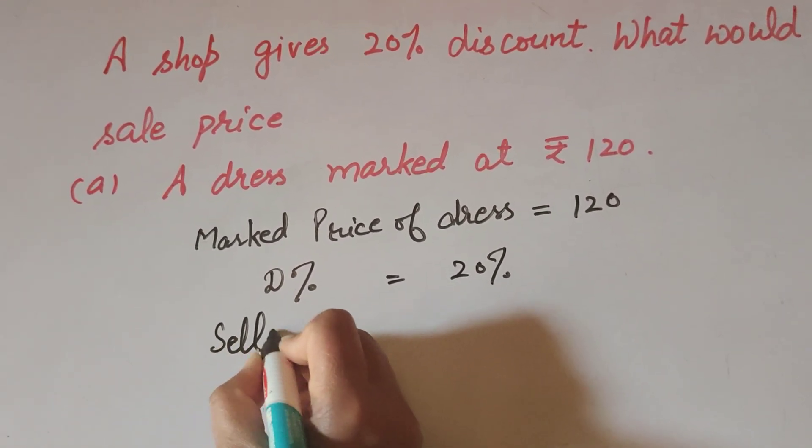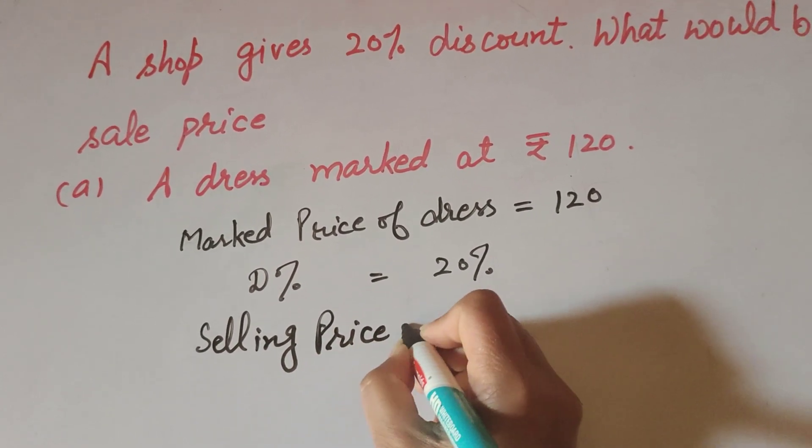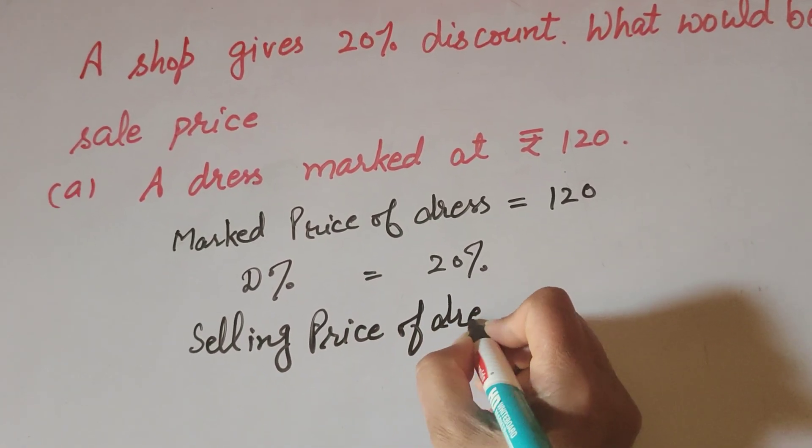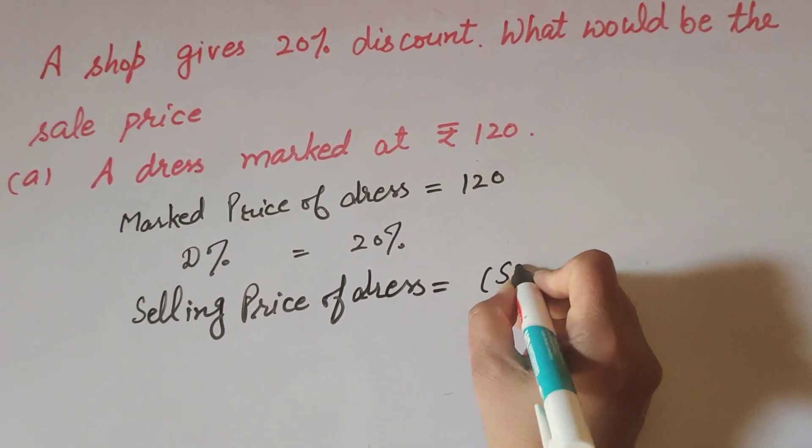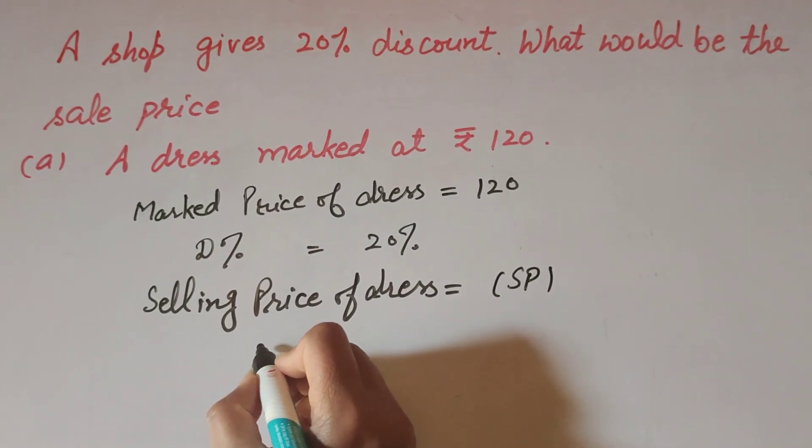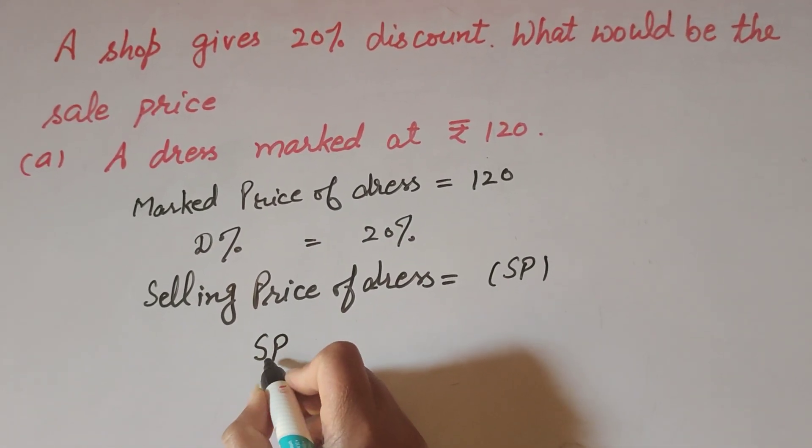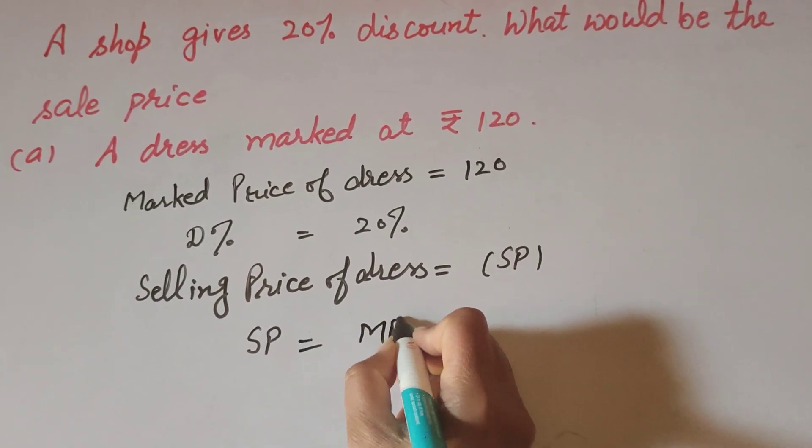Selling price of dress, that we have to find. So we suppose it is SP. SP is selling price that we have to find. So we know the formula to find selling price: SP is equal to MP into (1 minus discount percent over 100).